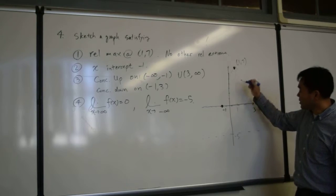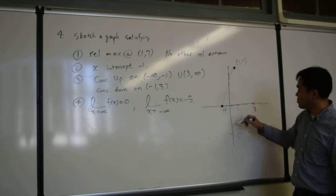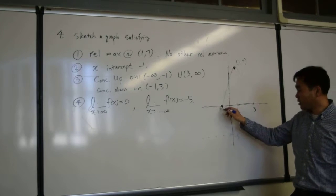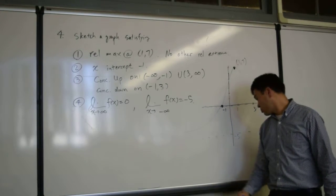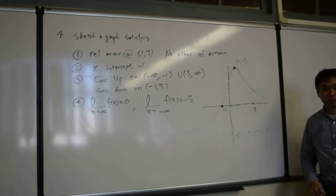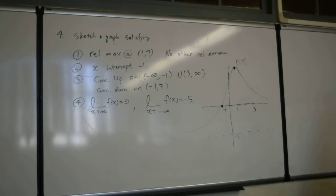So let's just connect these. These two should be connected. As you go left, it has to get closer and closer to negative 5. And as you go right, it has to get closer and closer to negative 5.